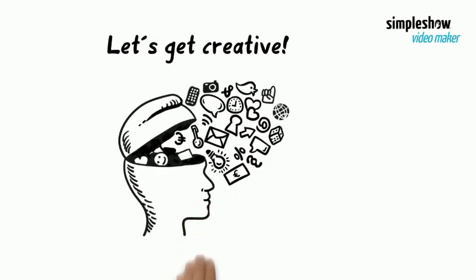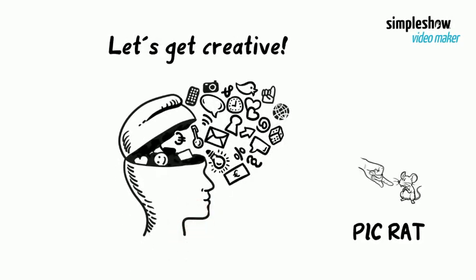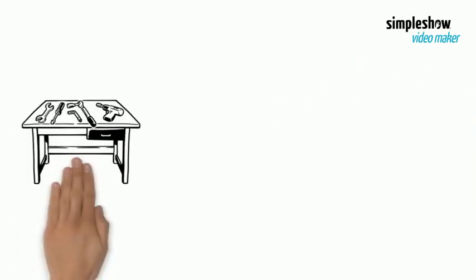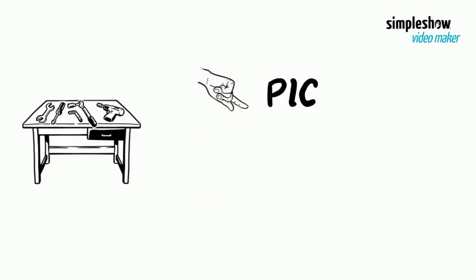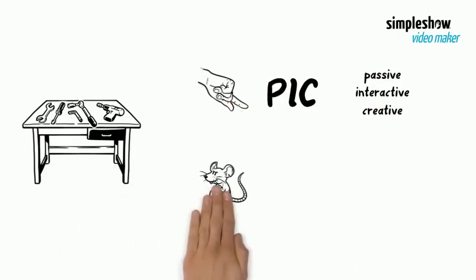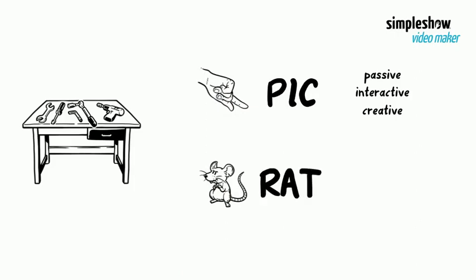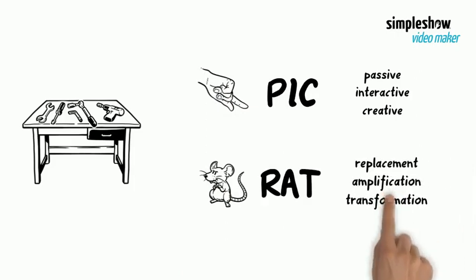Let's get creative with the PIC RAT model for trainers. It structures methods and tools of our training processes. PIC stands for passive, interactive, creative. And RAT means replacement, amplification, transformation.